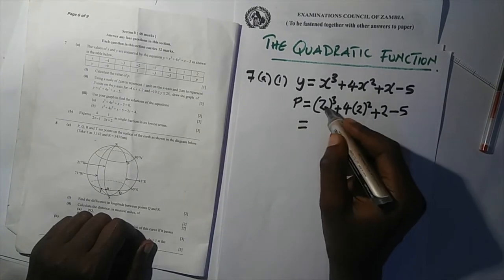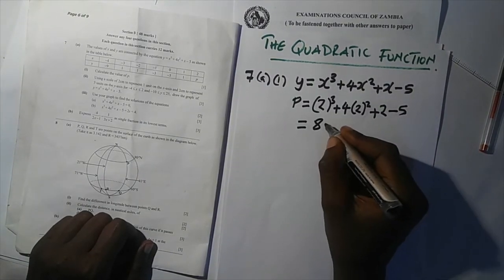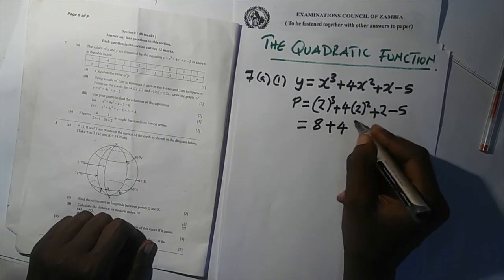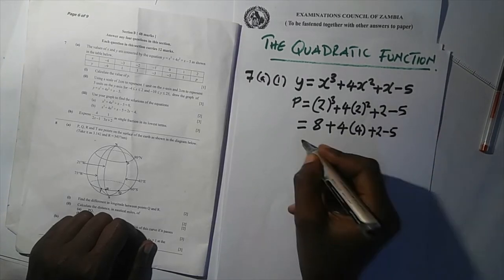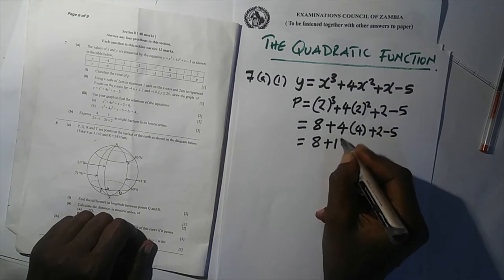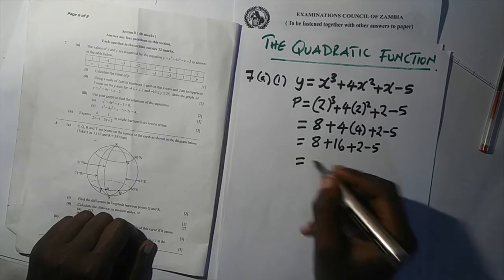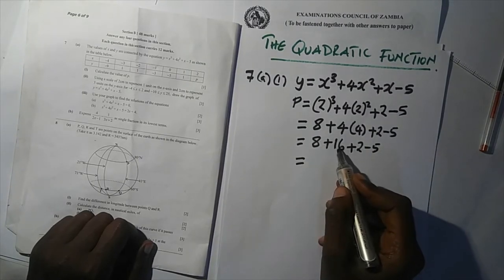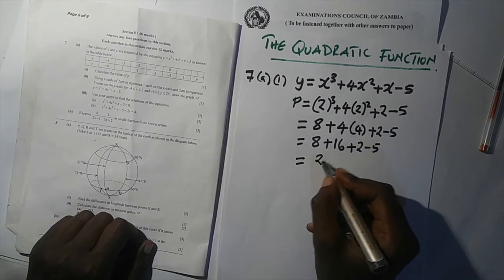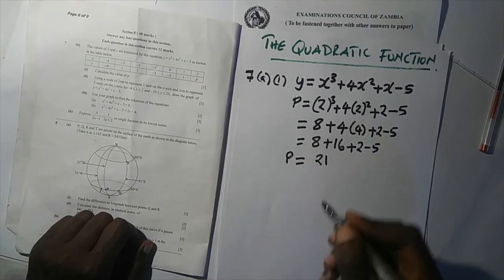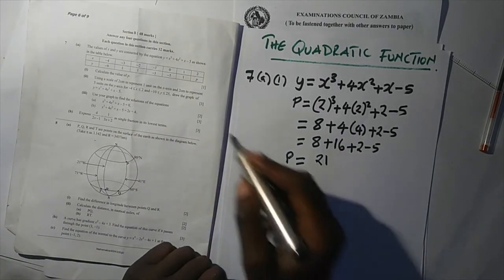Simplifying: 2³ = 8, then 4 × 4 = 16, plus 2 minus 5. So we have 8 + 16 + 2 − 5 = 21. Therefore p = 21. This carries one mark because it is straightforward to find.